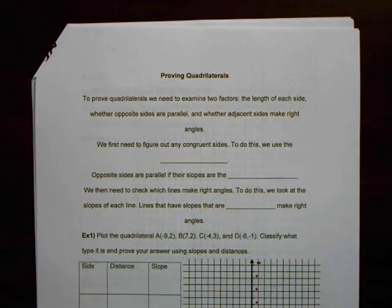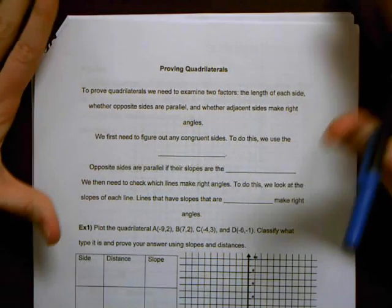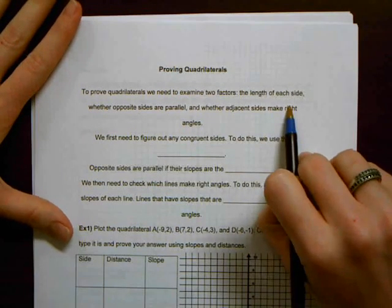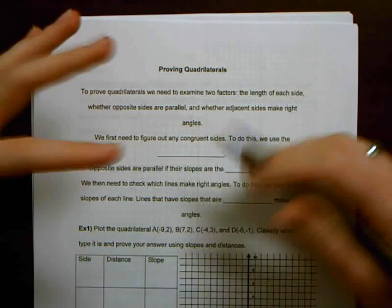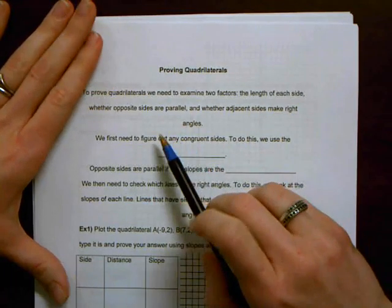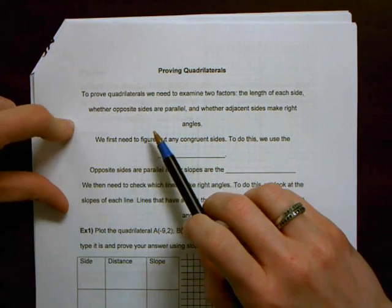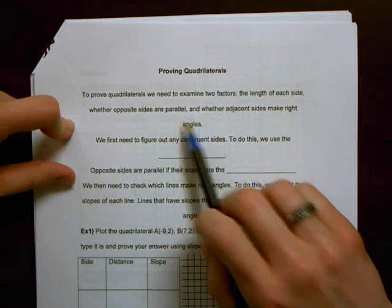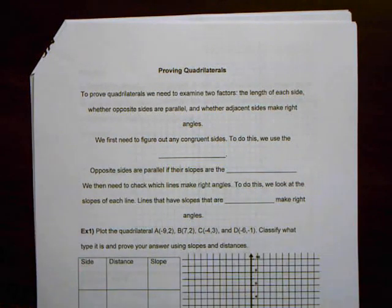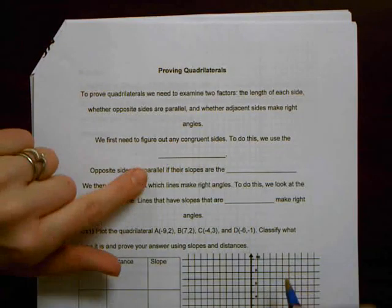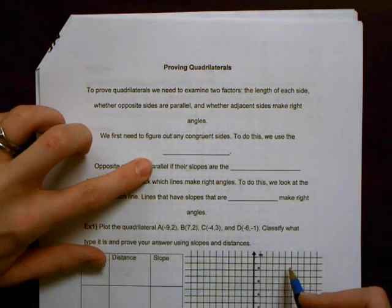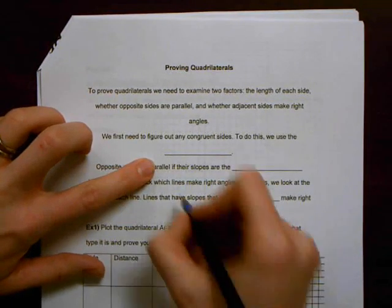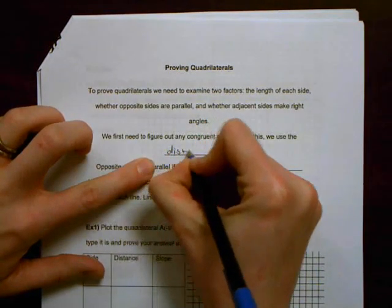So we kind of foreshadowed this already. When we were talking about the properties of quadrilaterals, there are two or three basic things that we have to make sure we check for. First, we need to know the length of each side so that we can verify whether different sides are congruent or not. We do this using our distance formula.